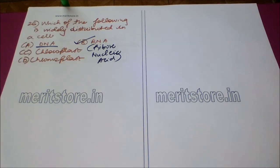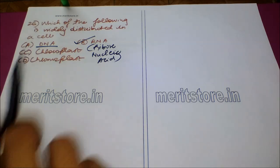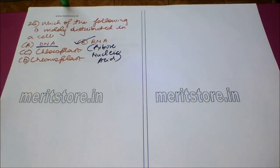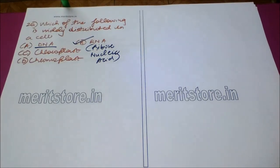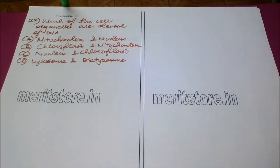The question is: which of the following is widely distributed in a cell? Option A: DNA, Option B: RNA, Option C: chloroplast, and Option D: chromoplast. The correct answer is Option B: RNA (ribonucleic acid), since DNA is generally only one copy per cell.